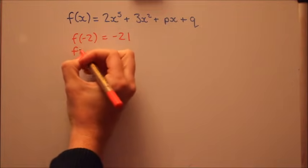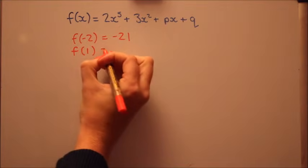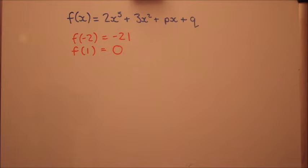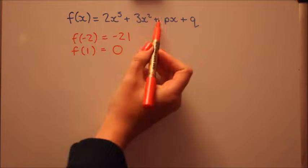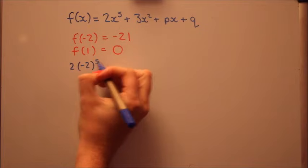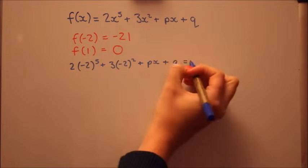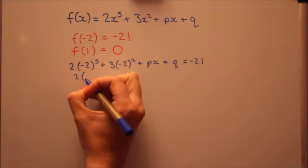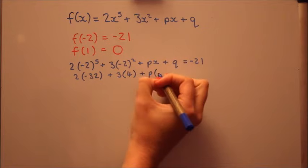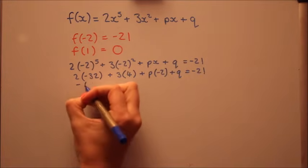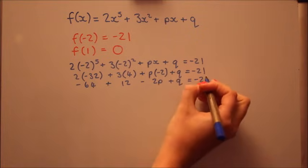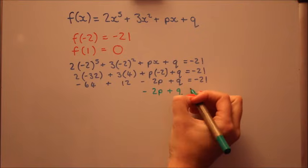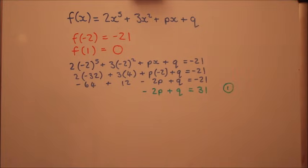Now the factor theorem, we're dividing by x minus 1, so we'll put in 1. And because it's a factor, there's no remainder, so it's 0. That's the information we've been given. We can now write those as equations if we put minus 2 into this polynomial. That's our first equation. I'm going to do the same thing now, putting one in to this polynomial to get the second equation.